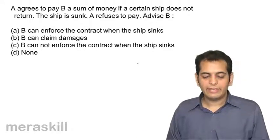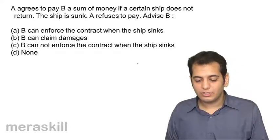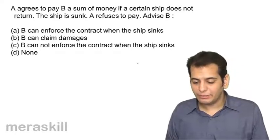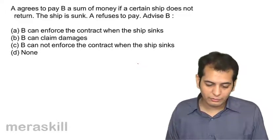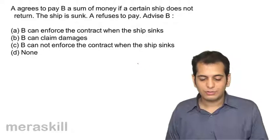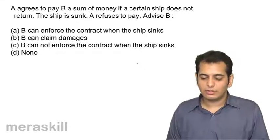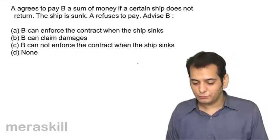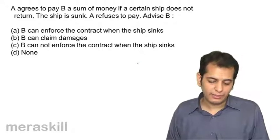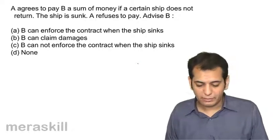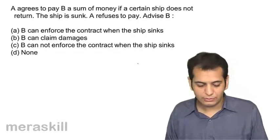First, A agrees to pay B a sum of money if a certain ship does not return. The ship is sunk. A refuses to pay. Advise B. Option A: B can enforce the contract when the ship sinks.